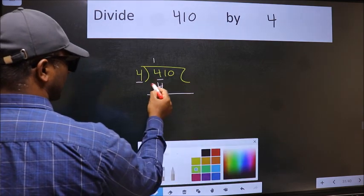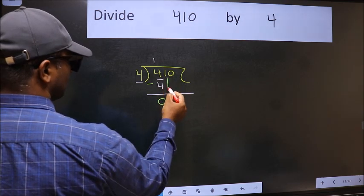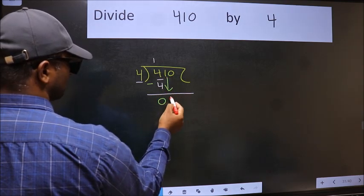Now we should subtract. We get 0. After this, bring down the beside number. So 1 down.